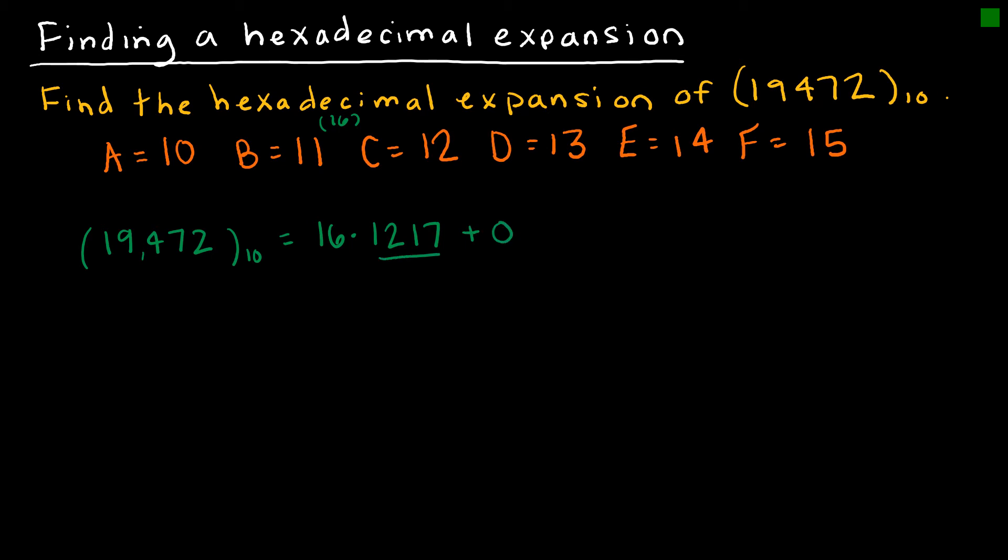Just as before, I'm going to take the 1,217 and divide it by 16, but I'm just going to write it as a multiplication problem. So 16 times 76, and this one has a remainder of 1.